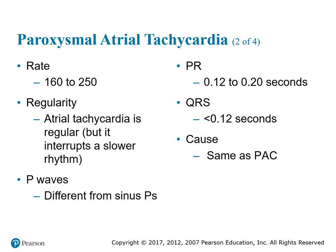The criteria for a PAT: your rate will be anywhere from 60 to 250 beats per minute. Regularity is basically regular with a pause. Your P waves are different from sinus P waves — they'll be abnormal due to the fact that they are fired from the atria instead of from the SA node. Your PR interval will still be within normal range, anywhere from 0.12 to 0.20 seconds. Your QRS will be less than or equal to 0.12 seconds.